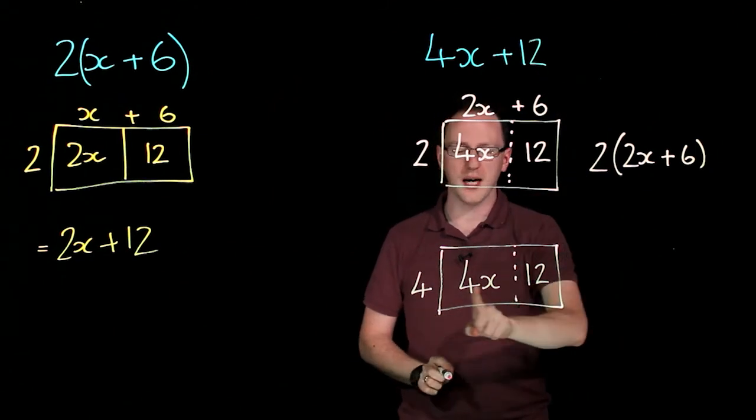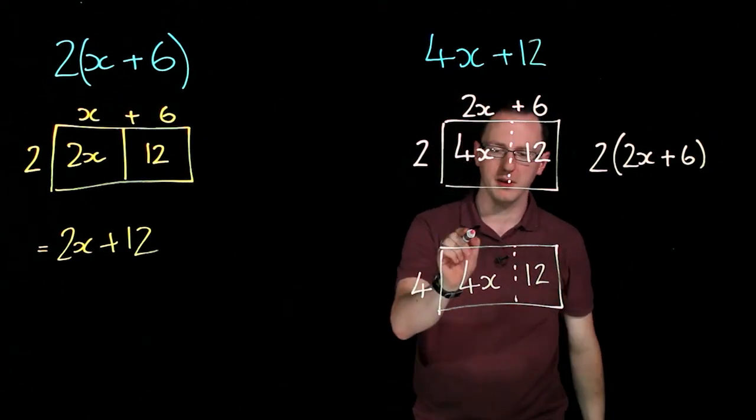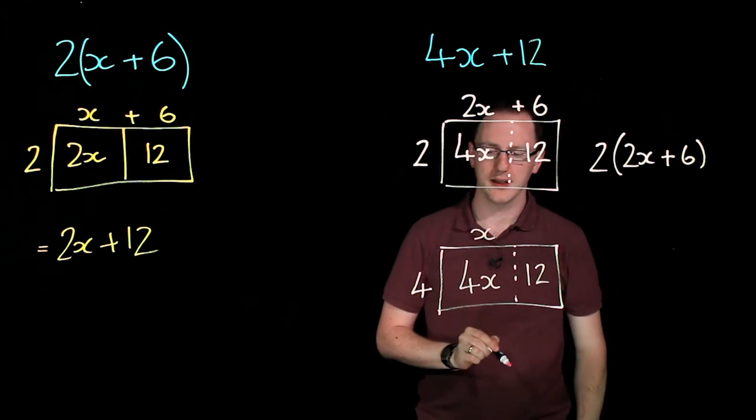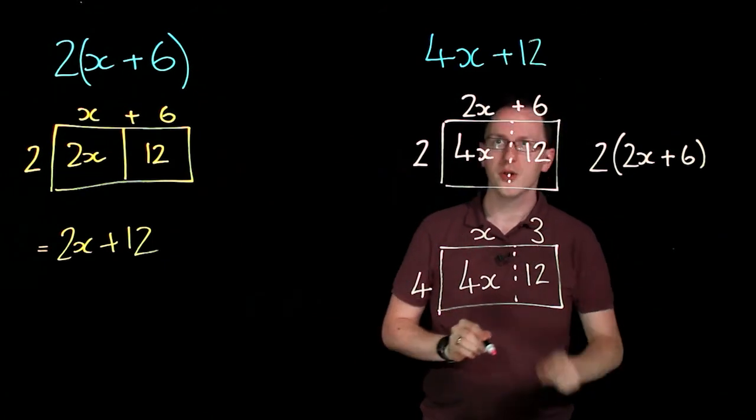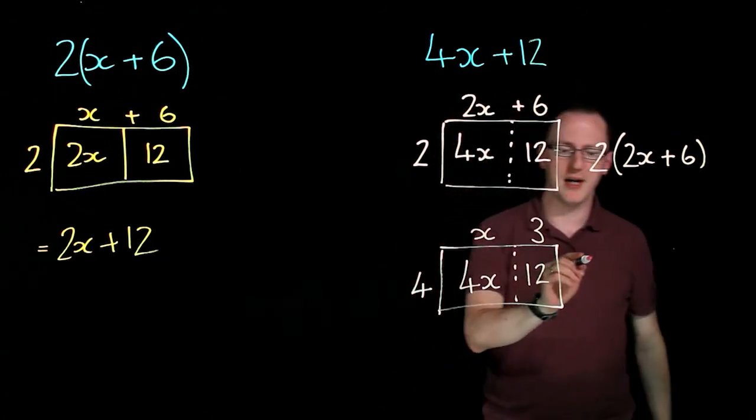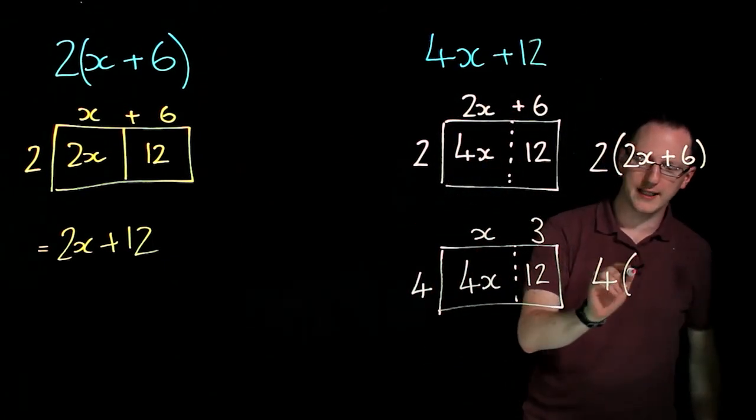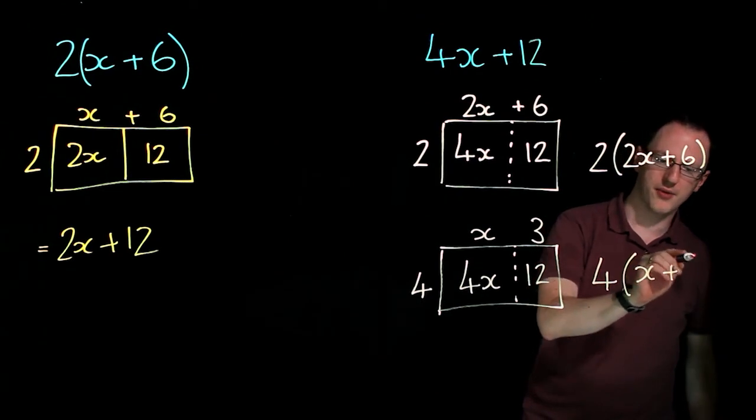And so 4 times what makes 4x? Well that's 4 times x. And 4 times what makes 12? Well that's 3. So this would give us the expression 4 brackets x plus 3.